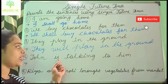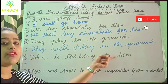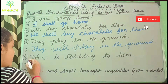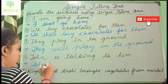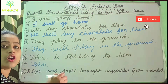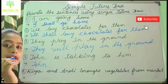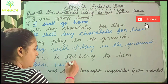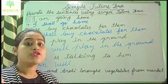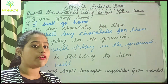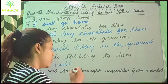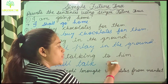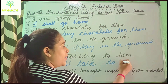Next one: 'John is talking to him.' John is the subject. After 'John' it will be 'will'. The V1 form of 'talking' is 'talk'. So: 'John will talk to him.'